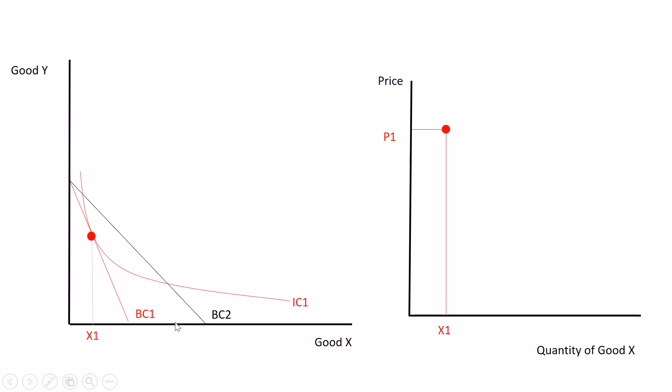But for each y we give up, we can gain additional x's above what we used to, and so our budget constraint pivots out along the x-axis. Which you'll now notice, this original indifference curve is no longer going to lead to an optimal outcome because there's no point of tangency. Instead, because our budget constraint got relaxed a little bit, we can reach some higher level of utility. That higher level of utility is associated with a higher consumption of good x.